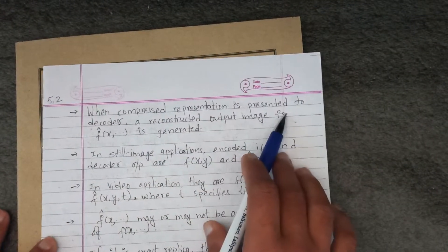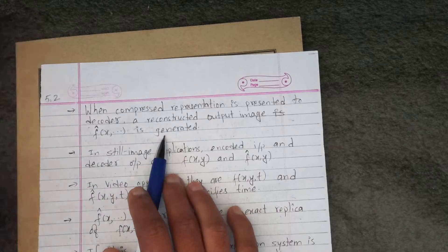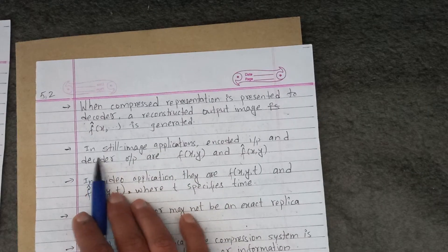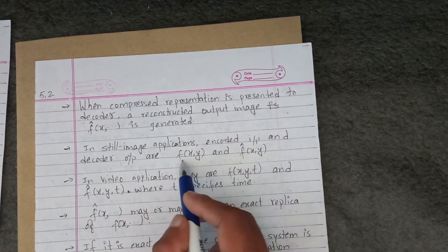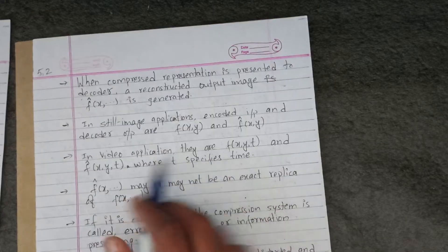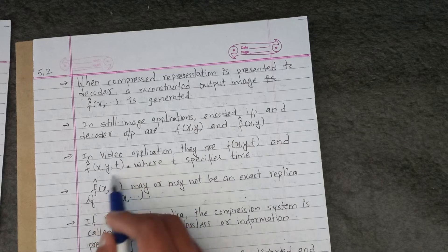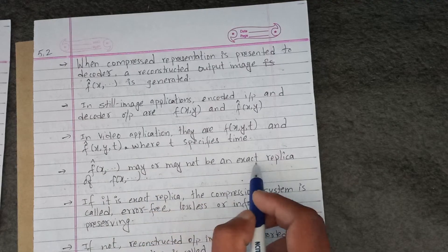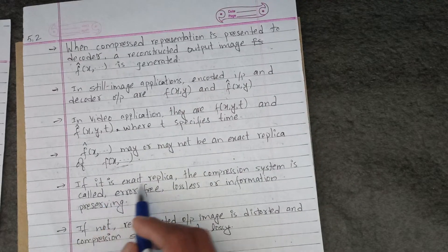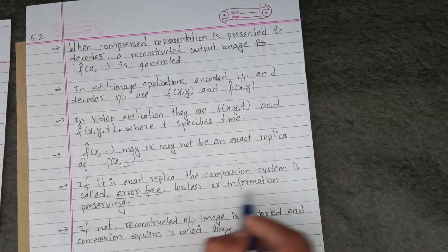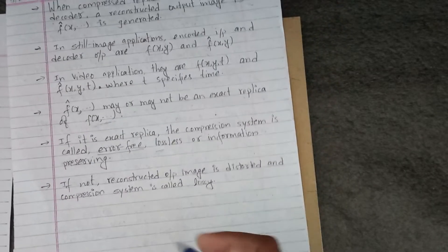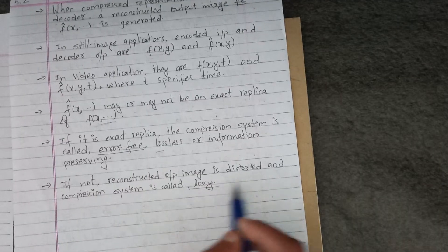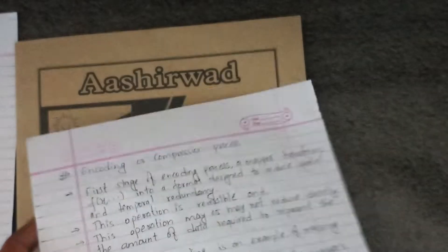This compressed representation is stored for later use or transmitted for use at a remote location. When the compressed representation is presented to the decoder, a reconstructed output image is generated. The output image may or may not be an exact replica of the input image. If it is an exact replica, the compression system is called error-free, lossless, or information-preserving. If the reconstructed output image is distorted, it is a lossy compression system.